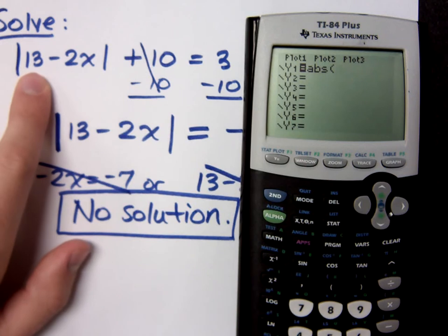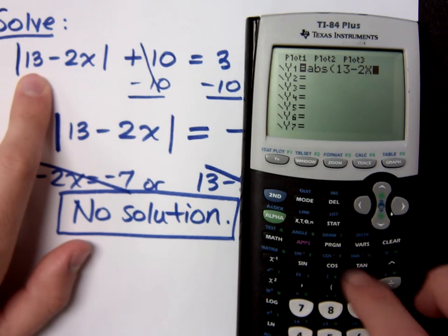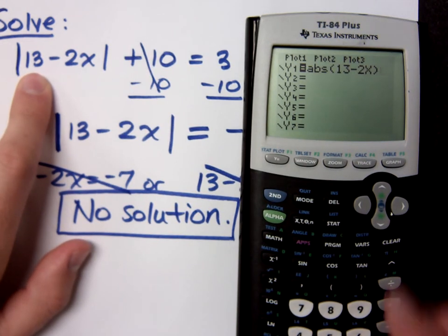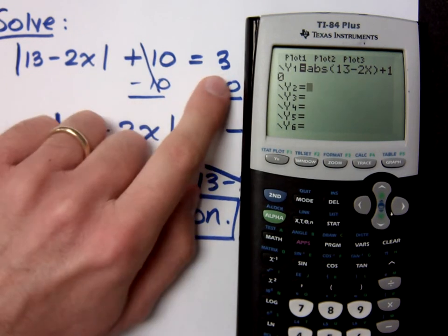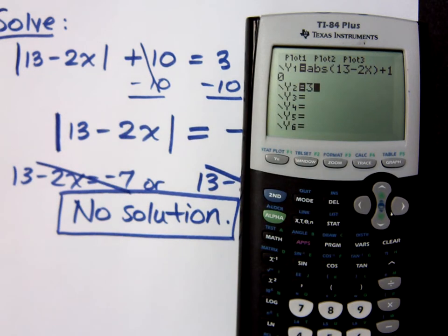So the absolute value of 13 minus 2x. Close the parentheses. Plus 10. That's one equation. And the other guy I'm going to type in 3. Now, when I do this, when I'm graphing each side of the equation, I'm looking for where these graphs what?